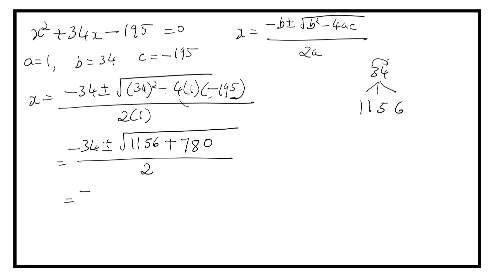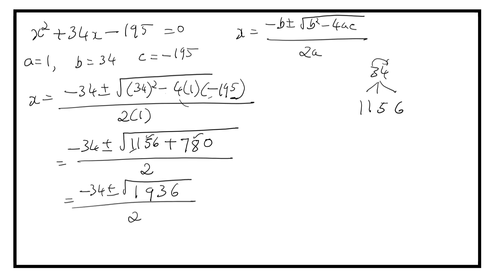That is equal to minus 34 plus or minus square root of 1936, upon 2.